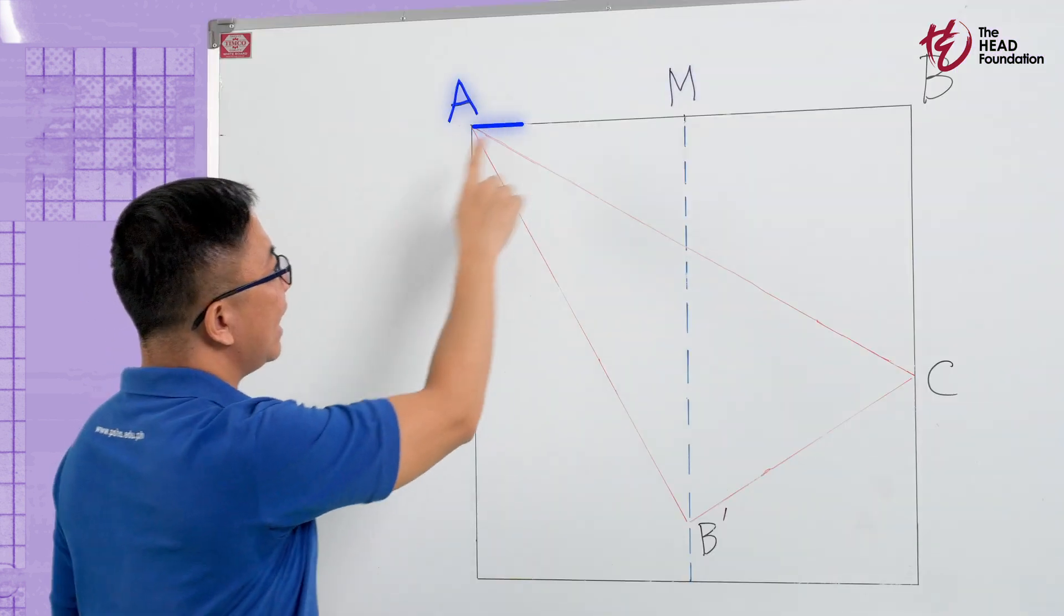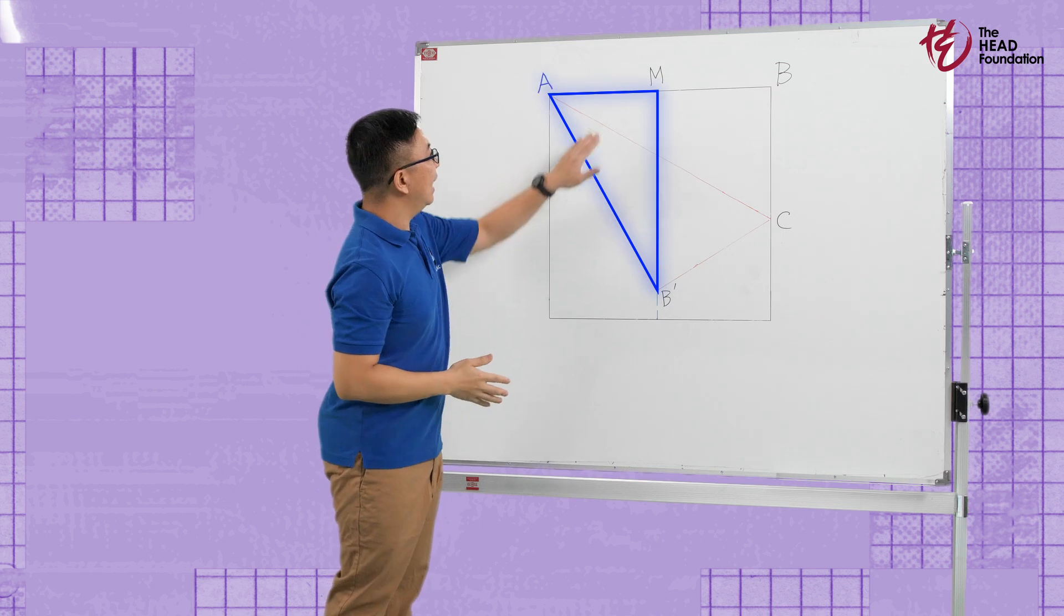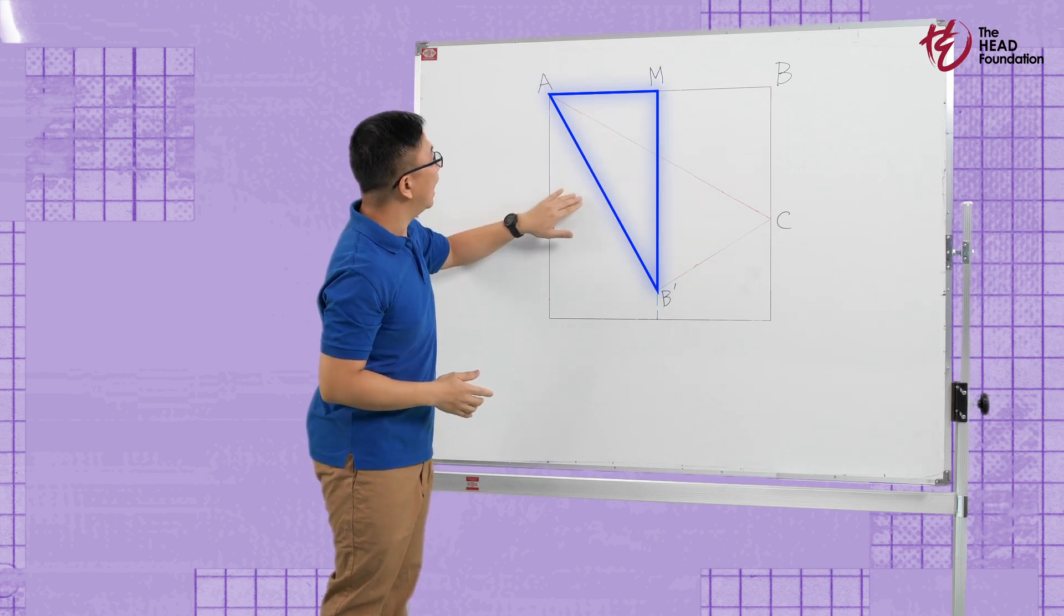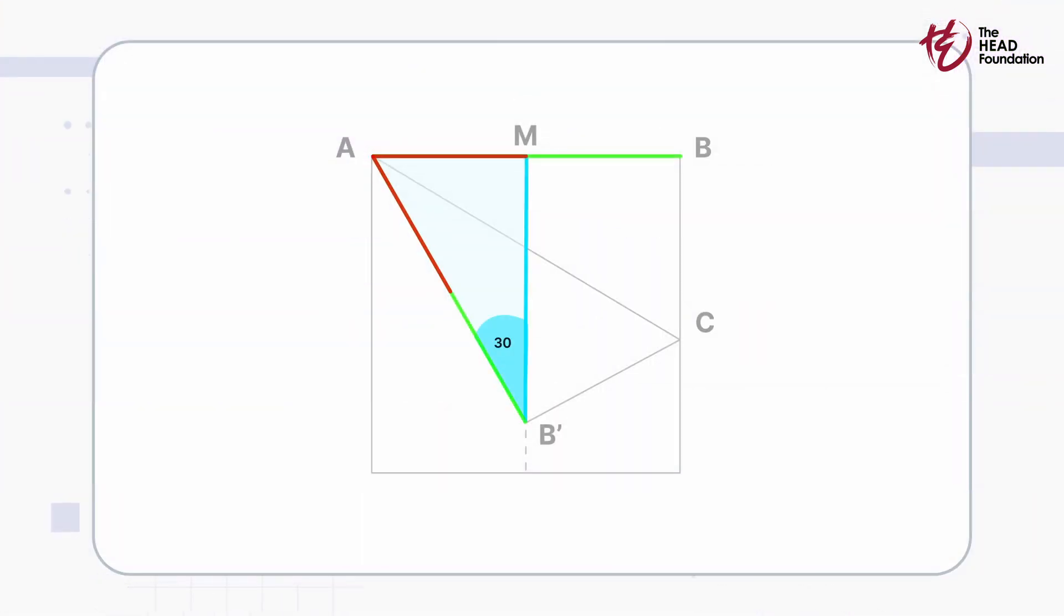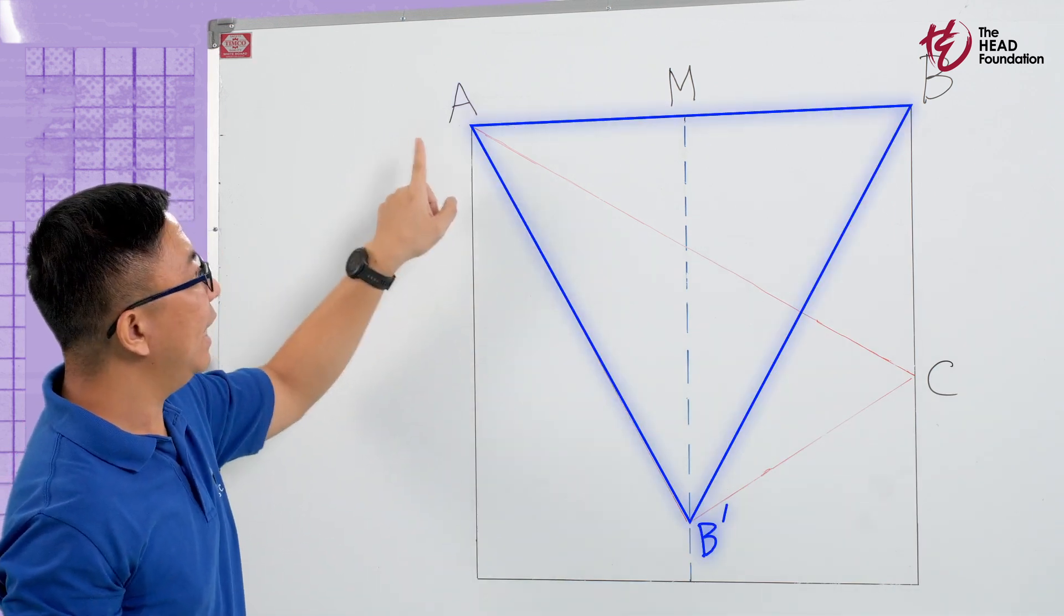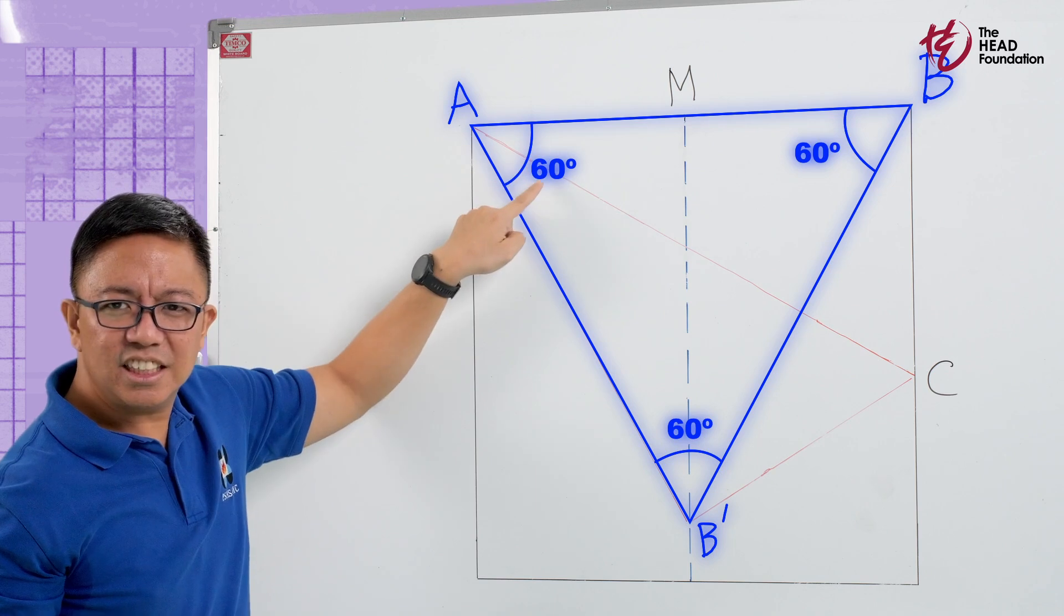Since angle AMB' forms a nice right angle and AM is half the hypotenuse of our new triangle, AMB', this makes it a classic 30, 60, and 90 triangle. This means angle B' is exactly 60 degrees.